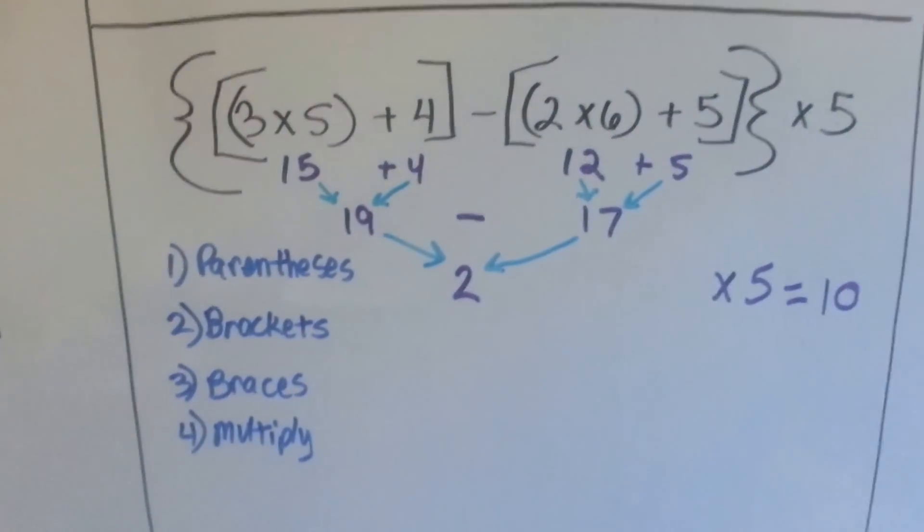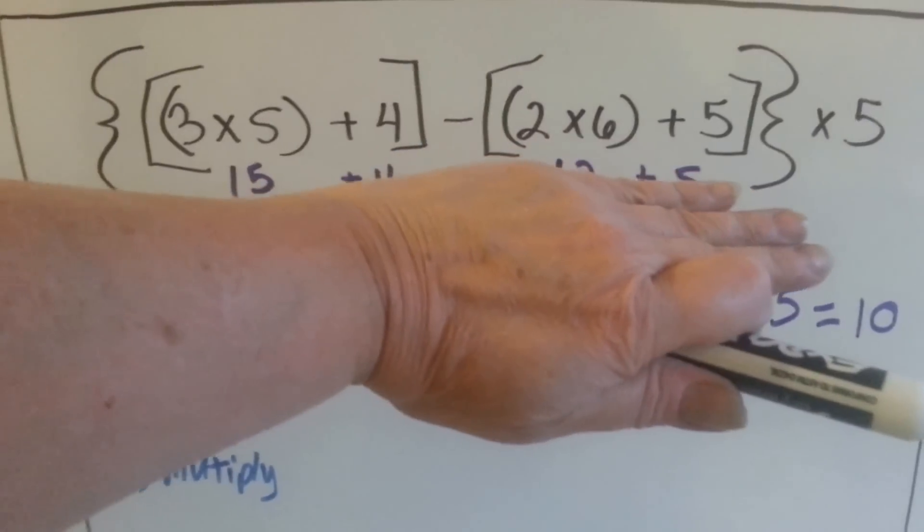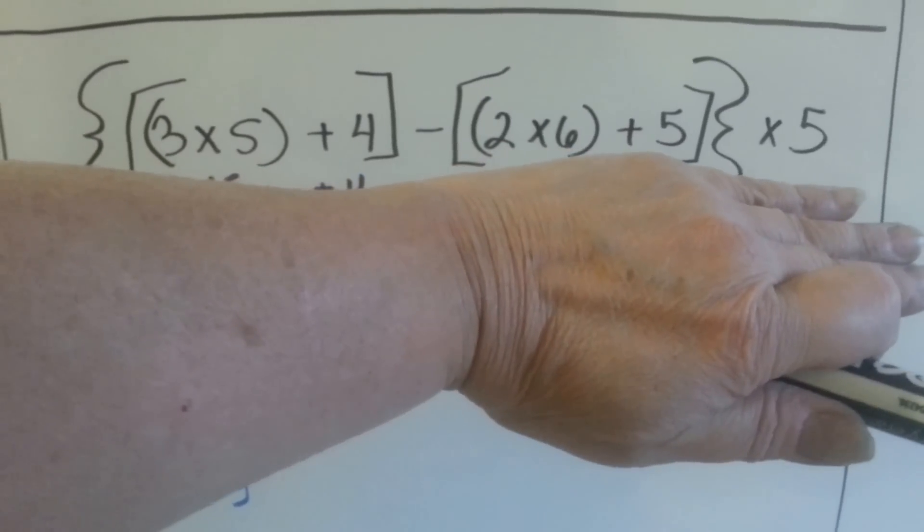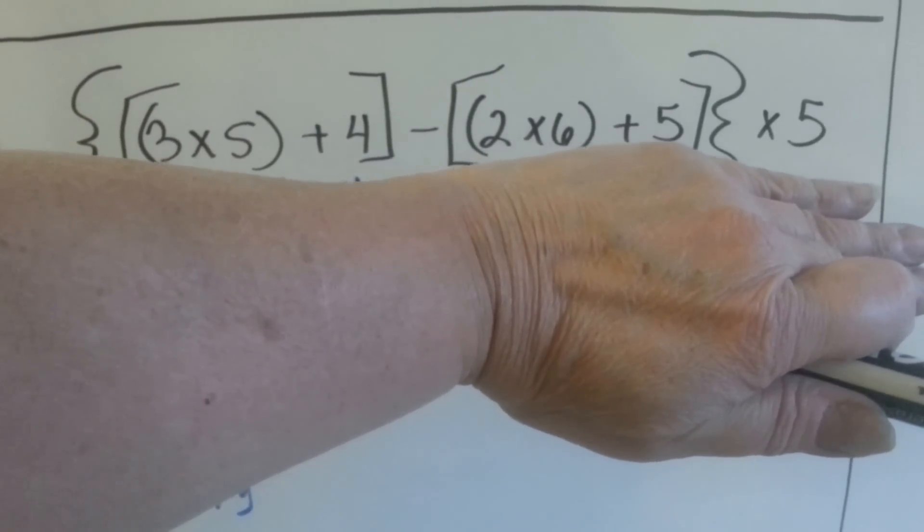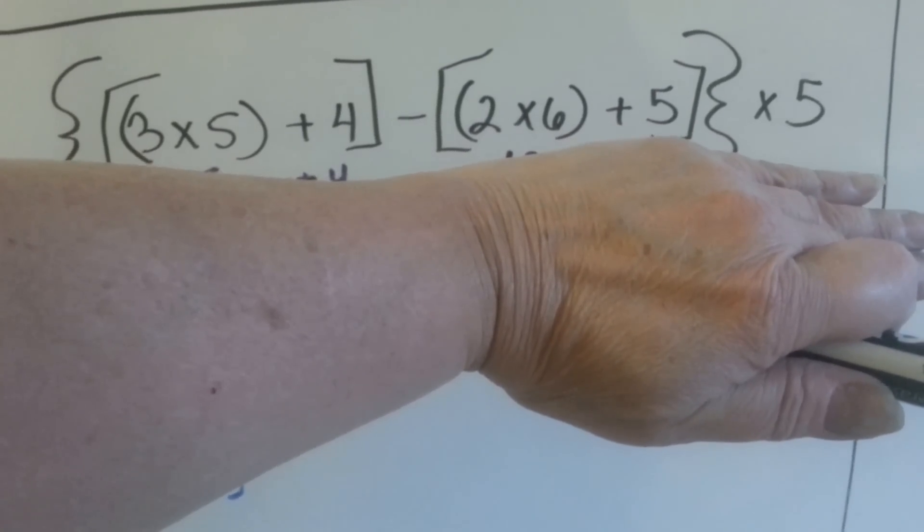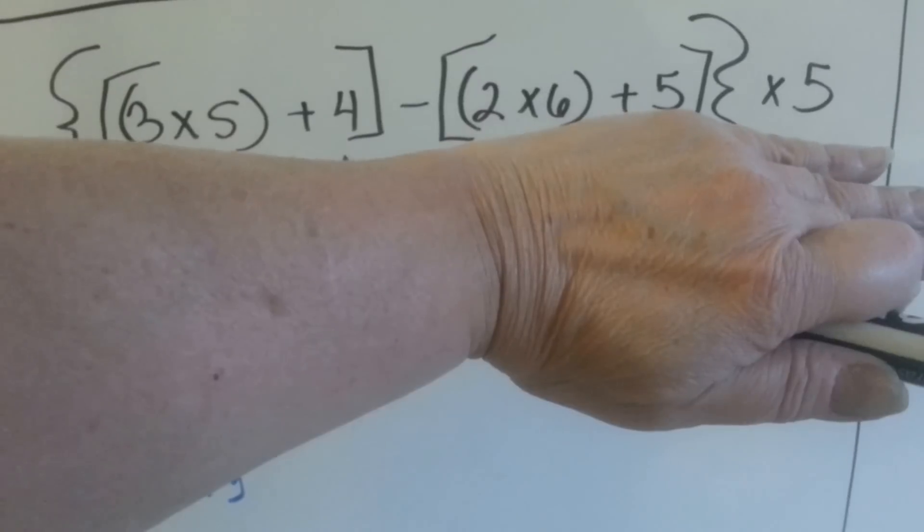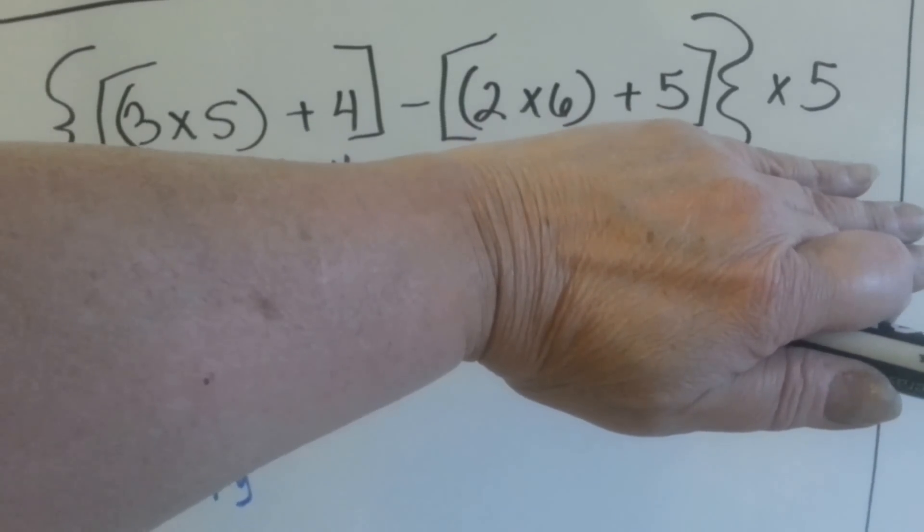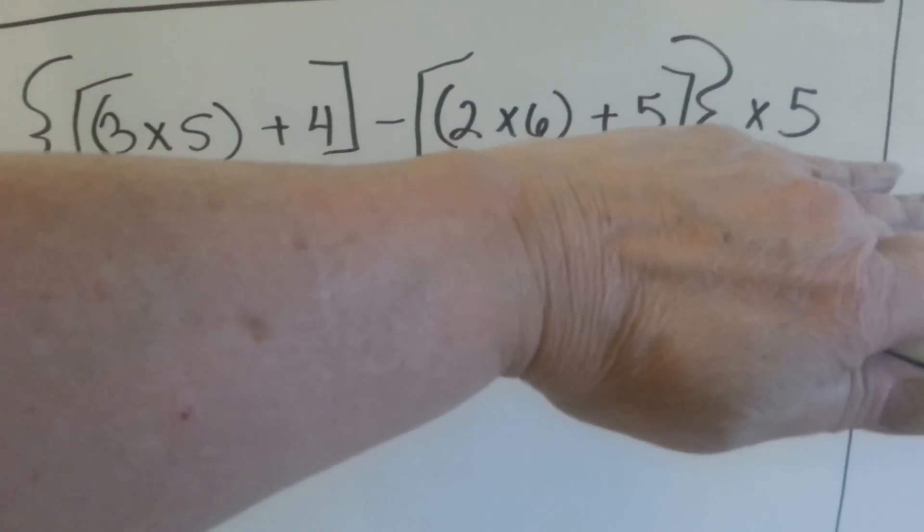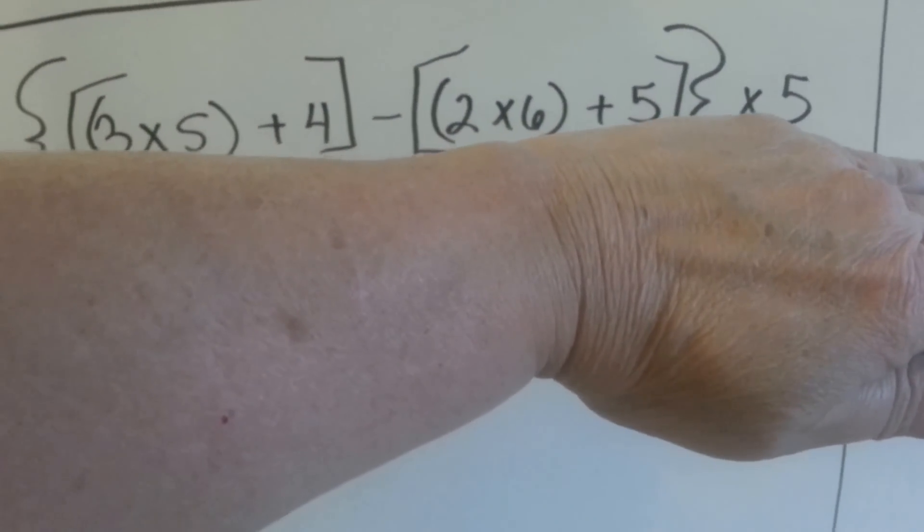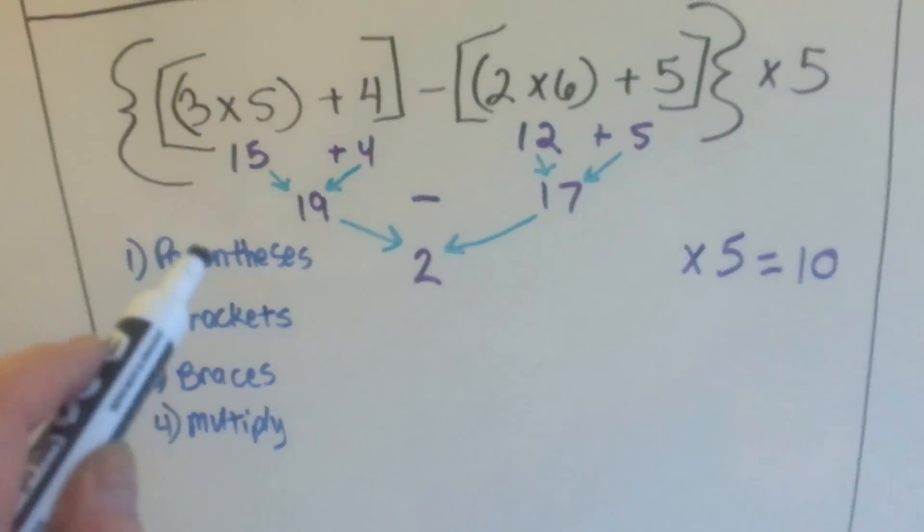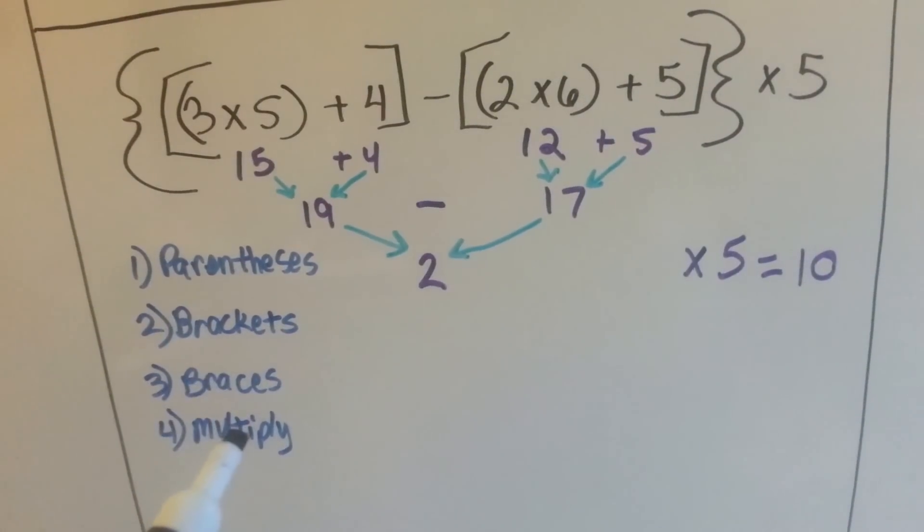Let's try this one. This one's really confusing looking. Look at all those parentheses and brackets and braces. What this means is, we're going to do 3 times 5 first, and we're going to do 2 times 6. Then we're going to add the answer to the 3 times 5 to the 4, and we're going to add the answer to the 2 times 6 to the 5. Then there's a subtraction sign right here in the center. Then we're going to subtract the one from the other, and then we're going to multiply it by 5. Because we have to do what's in the parentheses first, then the brackets, then the braces, and then multiply.